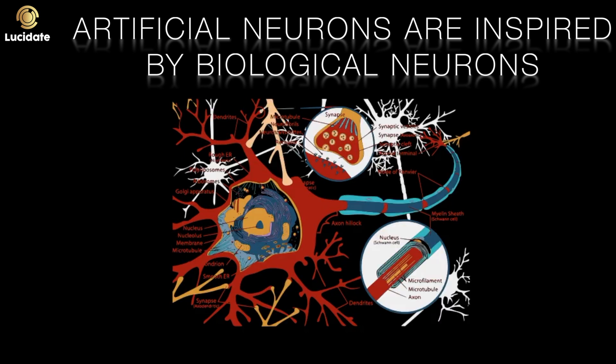These artificial neurons are inspired by biological neurons found in the brain. Biological neurons take inputs from other neurons. These inputs are in the form of electrochemical signals. If the signals of the inputs are above a particular threshold, then a neuron will fire. This sends an electrochemical signal to further neurons.